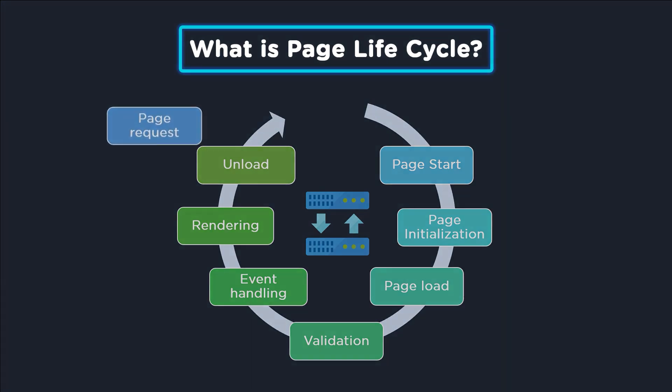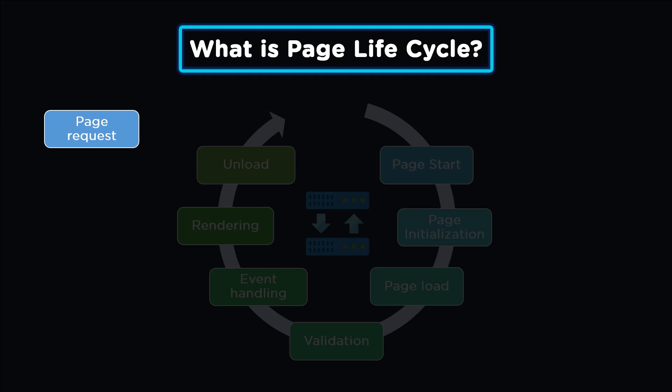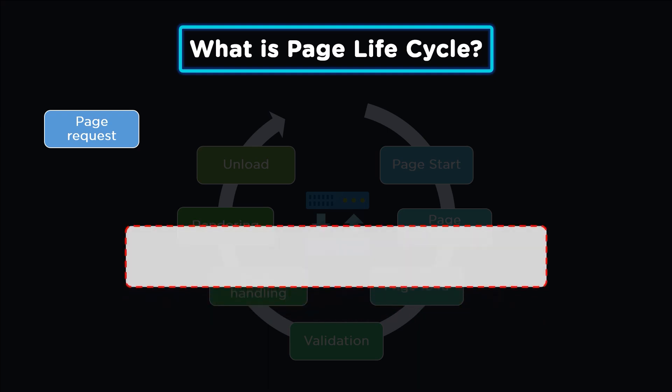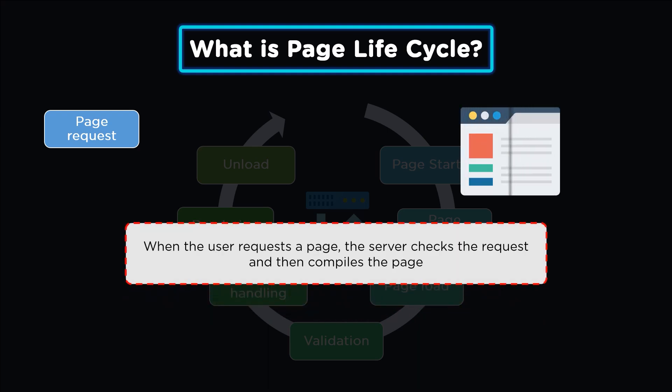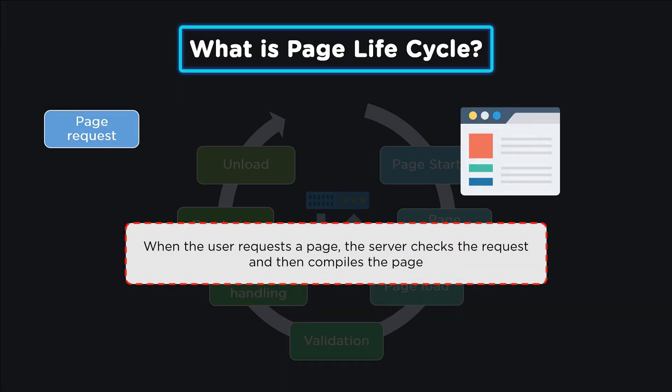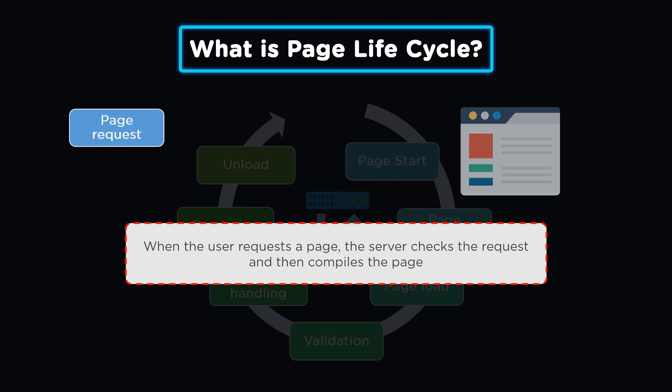The first phase of the page life cycle is page request. When the user requests a page, the server checks the request, compiles the page, and responds to the user. If the page is requested several times, the cache will check whether the output exists or not, and then send a response back to the user.